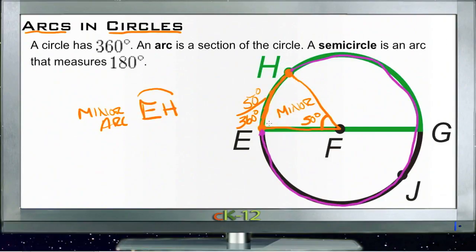In this case, maybe we'd call it E-H-J for instance, or H-J-E—it doesn't really matter. If we call this H-J-E with three letters and then put the arc symbol above it like so,